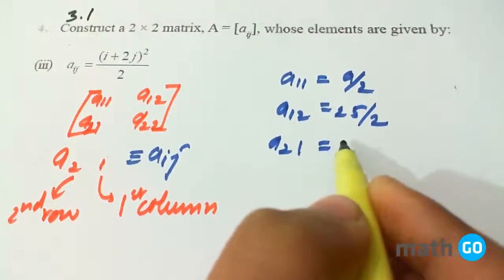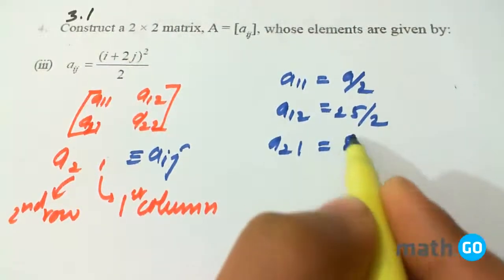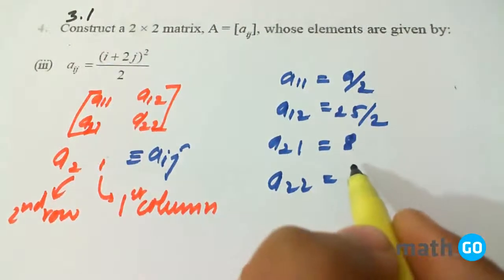A21 will have 2 plus 2, that is 4, 4 squared, 16, 16 by 2 is 8. And A22 equals to 36 by 2.